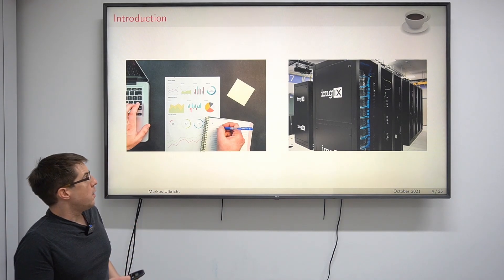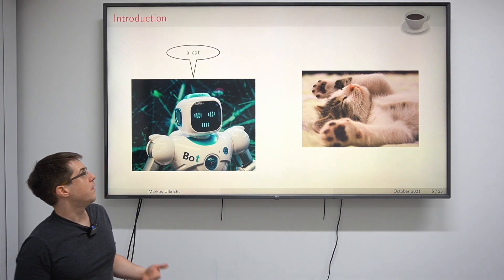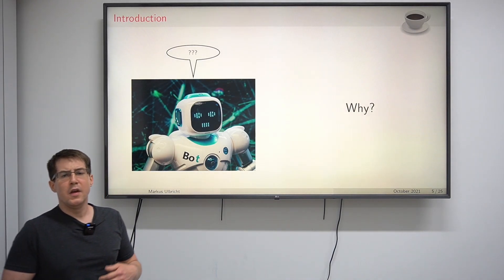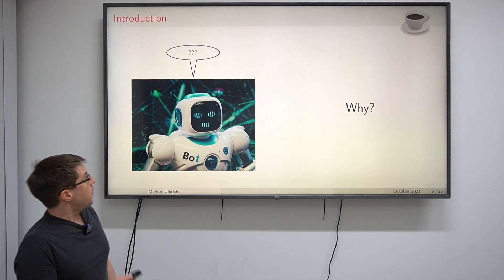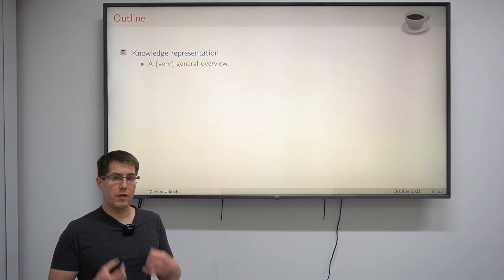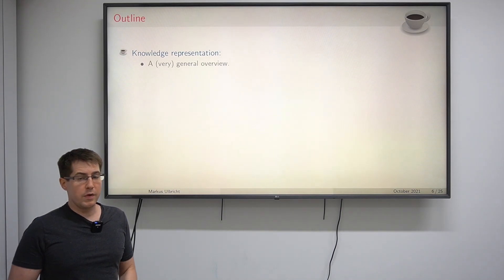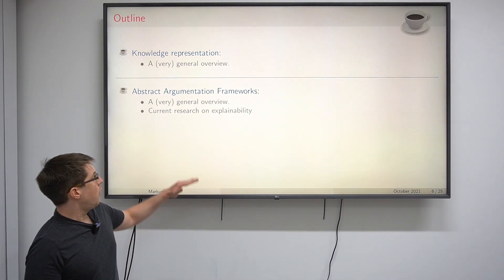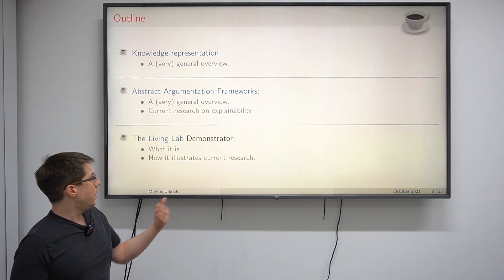Machine learning techniques are quite good at teaching machines to make the right decision, but quite bad at teaching machines to explain their decision, because machine learning relies on statistics. This is where knowledge representation and reasoning comes into play, trying to teach machines semantics like our common sense reasoning. We will discuss knowledge representation and reasoning, abstract argumentation frameworks, our current research on explainability, and finally how it links to our Living Lab demonstrator.